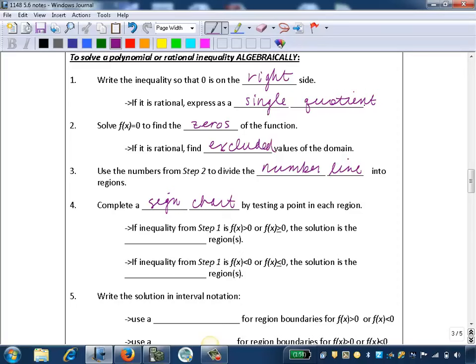If the inequality from Step 1, the original problem, is f(x) greater than 0 or f(x) greater than or equal to 0, the solution will be the positive regions of the number line, which makes sense because if our f(x), our y values, are positive, greater than 0 or greater than or equal to 0, it makes sense that we'd be looking for the positive regions of our number line.